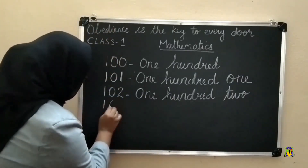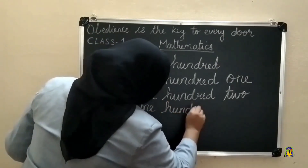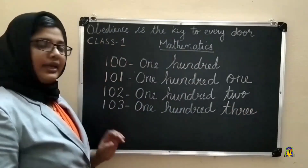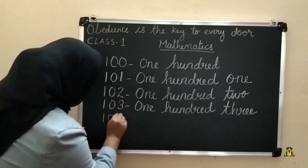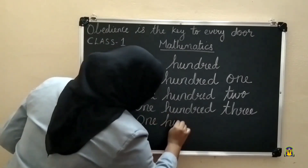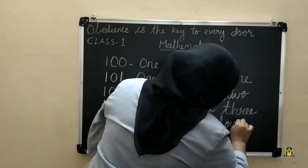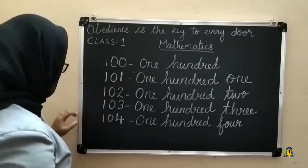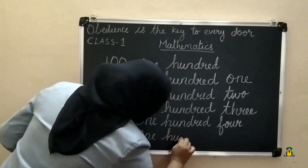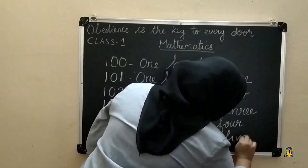Next number, 103: O-N-E H-U-N-D-R-E-D, one hundred, T-H-R-E-E, three. Next, 104: O-N-E H-U-N-D-R-E-D, one hundred, F-O-U-R, four. Next, 105: O-N-E H-U-N-D-R-E-D, one hundred, F-I-V-E, five.